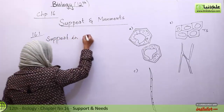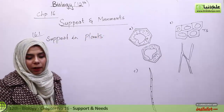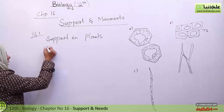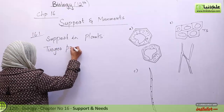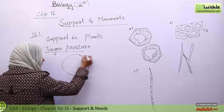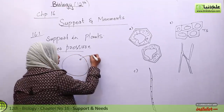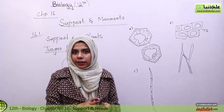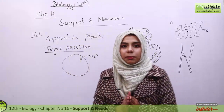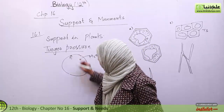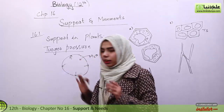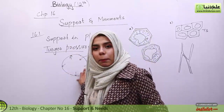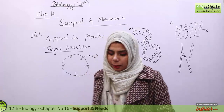The basic factor of support in plants is turgor pressure. Now what is turgor pressure? The plant cell, through osmosis, takes in water. This intake of water swells the cell. When the cell swells and reaches the turgid position, this cell then exerts pressure on the outer wall, and this pressure helps in support.